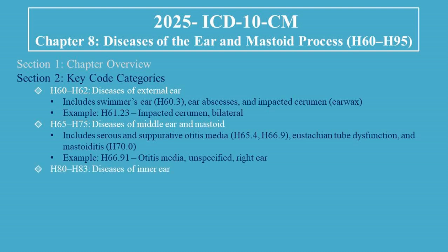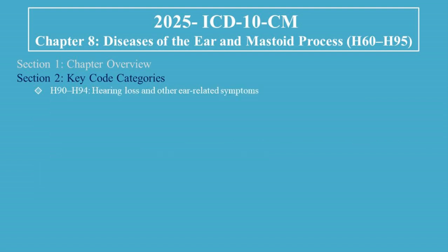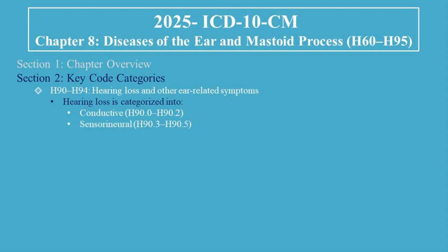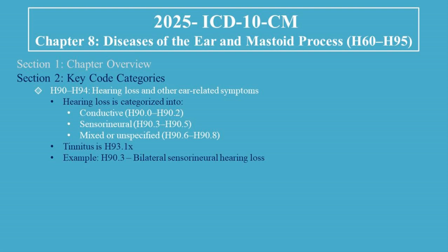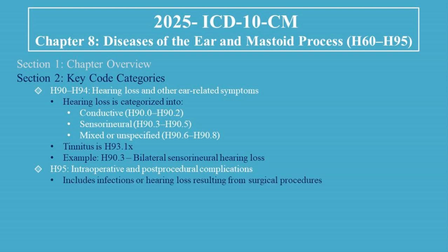H80 to H83 covers diseases of the inner ear, including otosclerosis, labyrinthitis, and Meniere's disease (H81.0). H90 to H94 covers hearing loss and related symptoms. Hearing loss is categorized into conductive (H90.0–H90.2), sensorineural (H90.3–H90.5), and mixed or unspecified (H90.6–H90.8). Tinnitus is H93.1x. Example: H90.3, Bilateral Sensorineural Hearing Loss. H95 covers intraoperative and post-procedural complications, including infections or hearing loss resulting from surgical procedures.